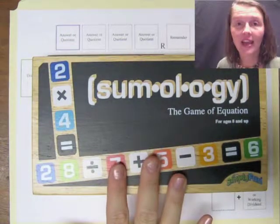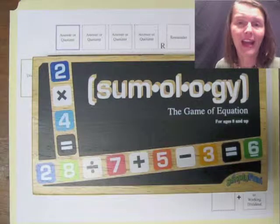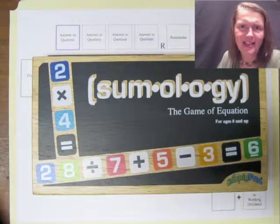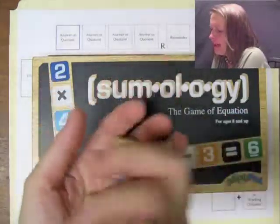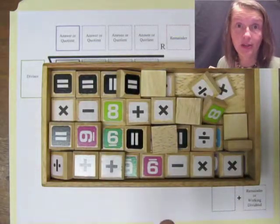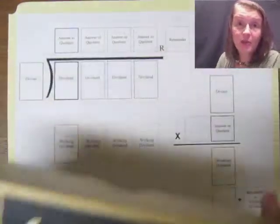I have here a game from Simply Fun called Summology and I haven't even looked at the rules of the game. I am fascinated because they are number tiles. Look at this. They're just little number tiles and they're awesome. They also have pluses and minuses and other operations and equal sign. I'm going to use them for division.